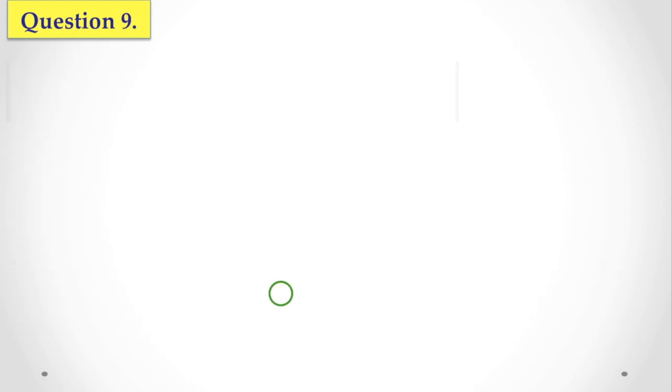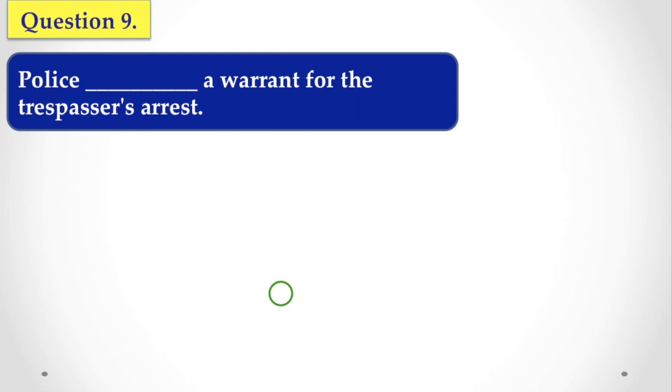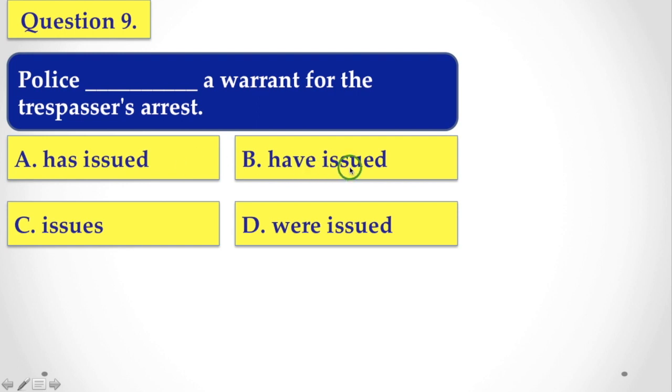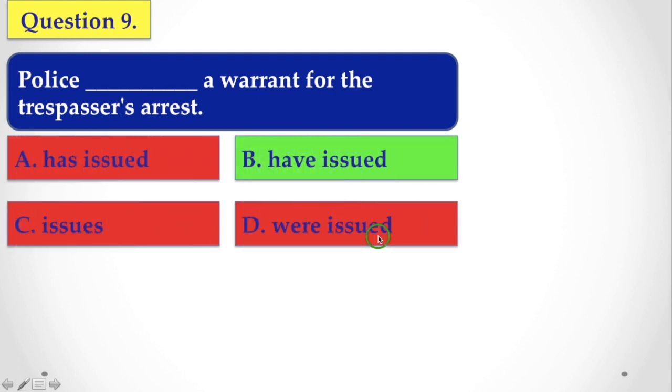Next question for you, Rule 9: The police a warrant for the trespasser's arrest. And the options are: has issued, have issued, issues, were issued. And the correct answer is have issued.